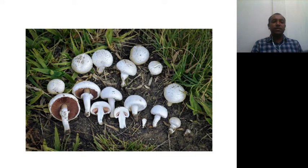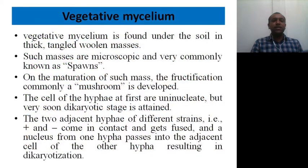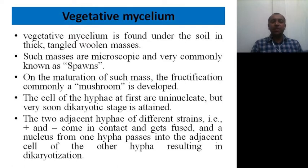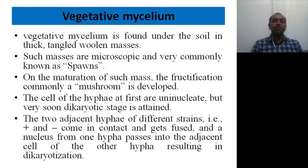The two most common and commonly cultivated mushrooms are Agaricus campestris and Agaricus bisporus. The vegetative mycelium is found under the soil and is entangled with thick woody masses. These woody masses are microscopic in nature and are also known as spawns — they are the starting material for germination.